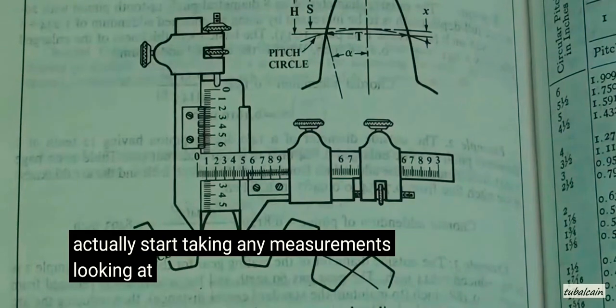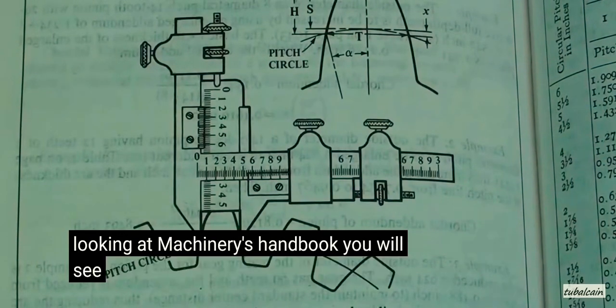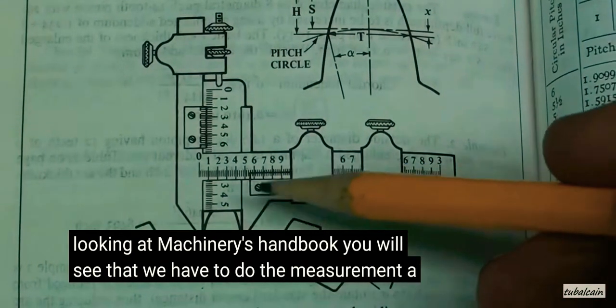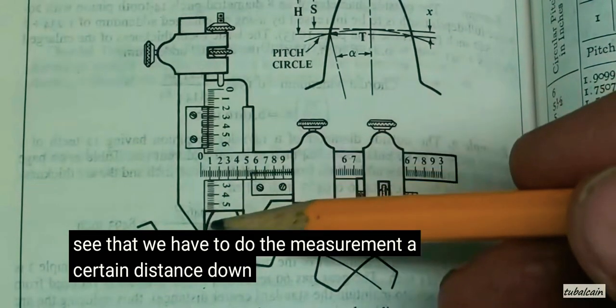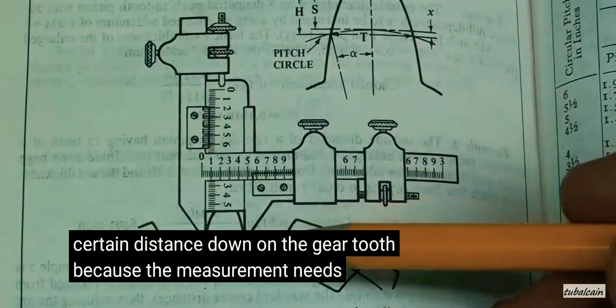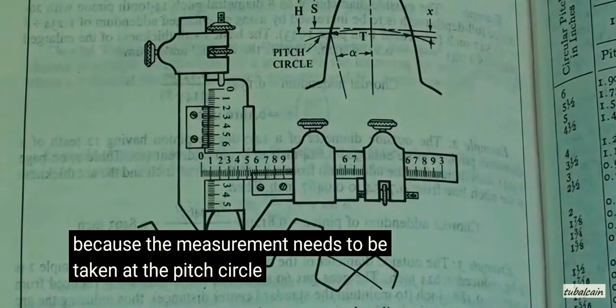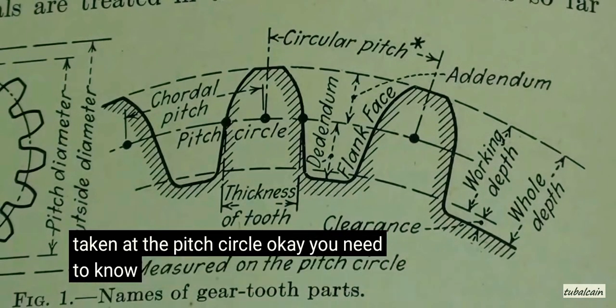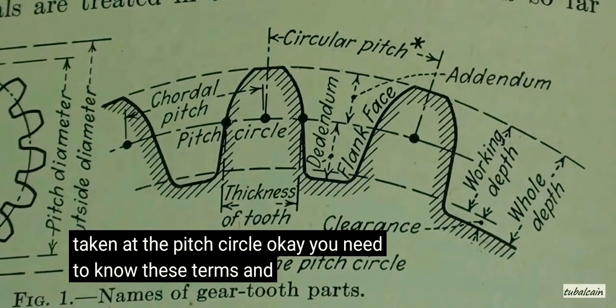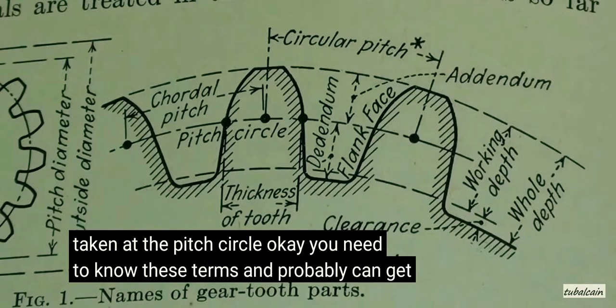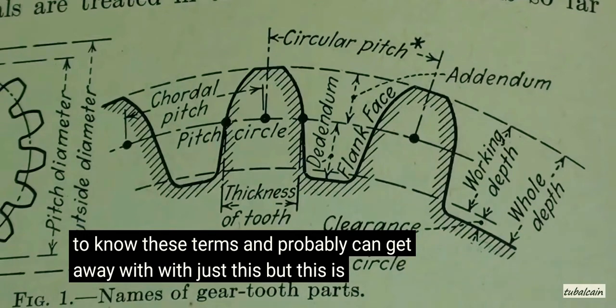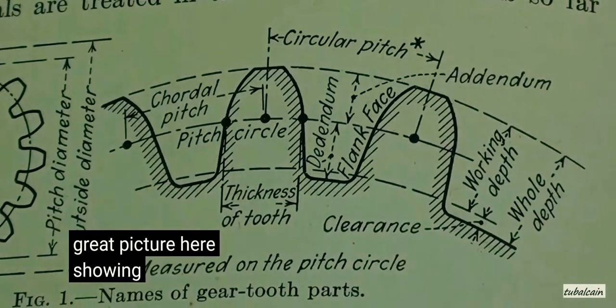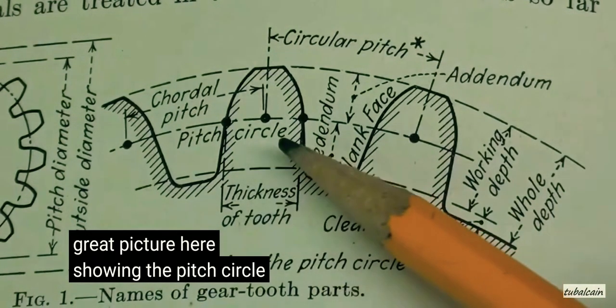Looking at machinery's handbook, you will see that we have to do the measurement a certain distance down on the gear tooth, because the measurement needs to be taken at the pitch circle. You need to know these terms and probably can get away with just this, but this is a great picture here showing the pitch circle.